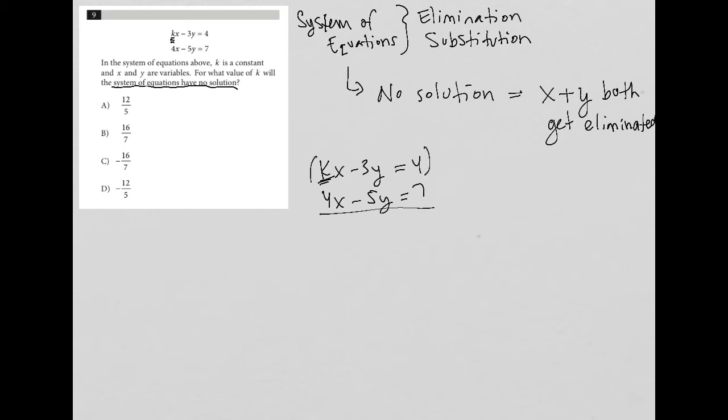But, I do see that I have a negative 3 from my y value and a negative 5 in front of my y value on the bottom. So, if I multiply the top by negative 5 and the bottom by positive 3, I would get a negative 5kx plus 15y equals negative 20. That's a 4 here.